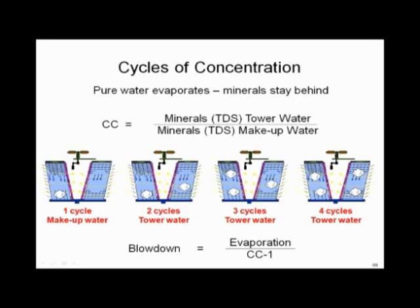When the cooling tower starts up, let's take all the solids and just make them a big rock. We've got one cycle of concentration when we start — 1,000 gallons of water in our tower. When we evaporate that water down, we've got one rock. But when we evaporate that 1,000 gallons down to one rock, we make up another 1,000 gallons of water, and that brings another rock. Now I've got two cycles of concentration: two rocks and 1,000 gallons of water.